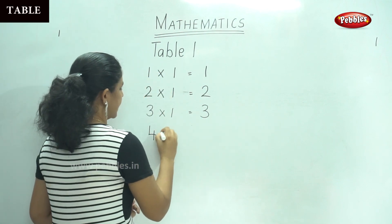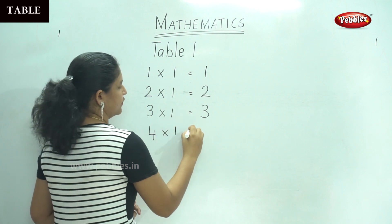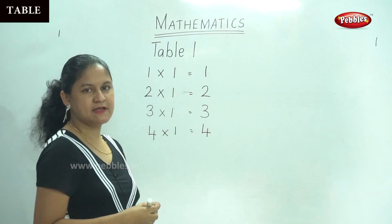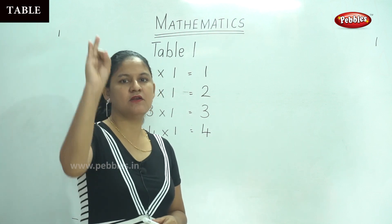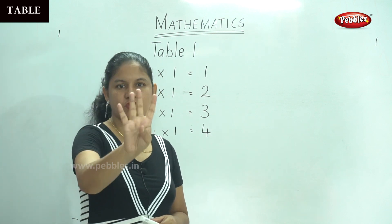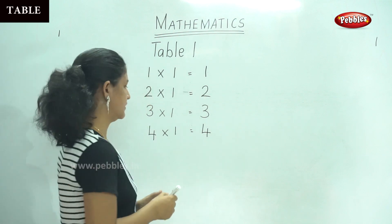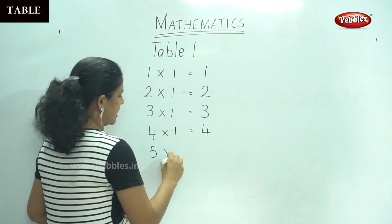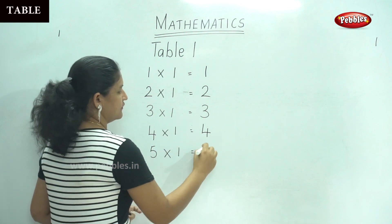4 times 1 will give you 4. Counting 1 four times: 1, 1, 1, 1 — 4 times 1 gives you number 4. And 5 times 1 will give you 5.